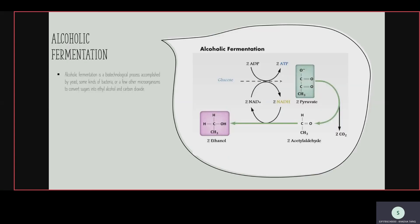Next is alcoholic fermentation, also known as ethanol fermentation. In this fermentation, ethanol and carbon dioxide are formed, which is why it is called ethanol fermentation. Sugar is converted into small molecules. Glucose is converted into two pyruvate, and two pyruvate is converted into two acetaldehyde.